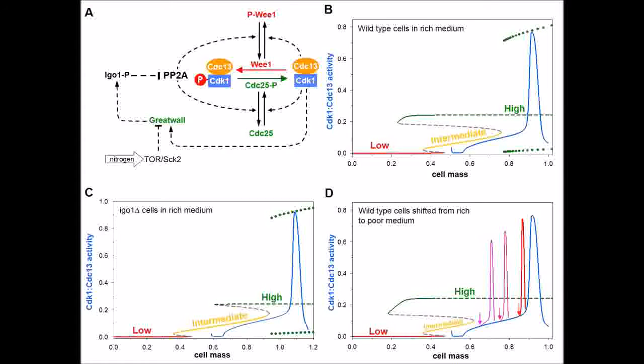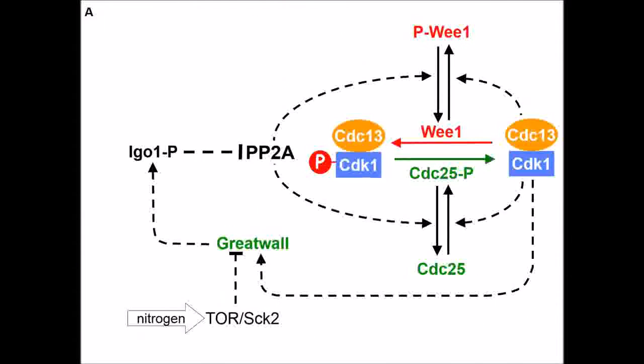Entry into mitosis in eukaryotic cells is triggered by a mitotic switch controlling CDK1 cyclin B protein kinase, which corresponds to CDK1-CDC13 in fission yeast. CDK1 is counteracted by type 2A protein phosphatase, which is an inhibitor of mitosis.